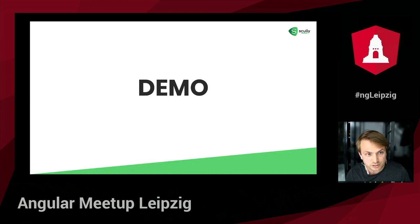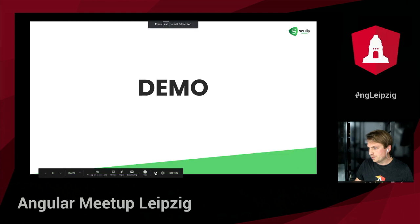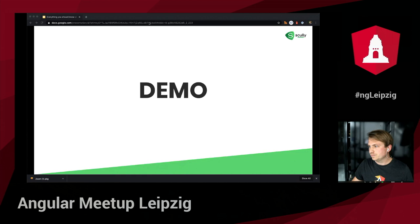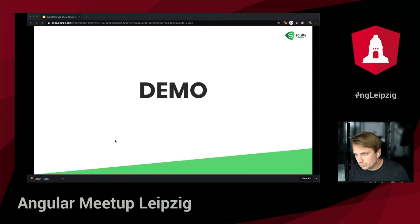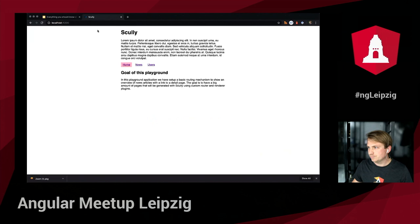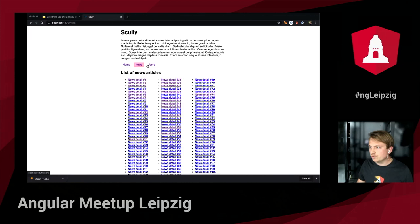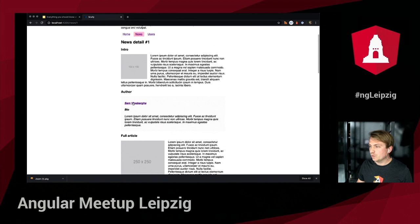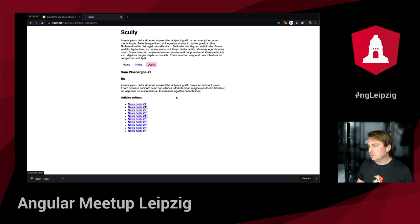Enough with the high-level theory — let's show a real code example in action. To show the demo, I'll first run the application as a normal Angular application, just serving it as we would normally do. This is the example application — a simple app with a few routes: a home route, a news overview, a news article detail showing an author with a link to the author's detail page, and a users overview. The detail page of the author highlights their bio and shows the articles they have written.